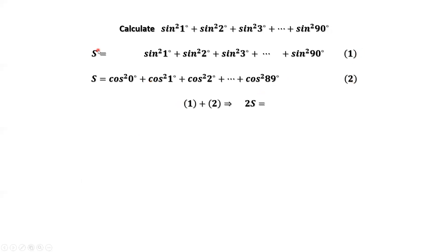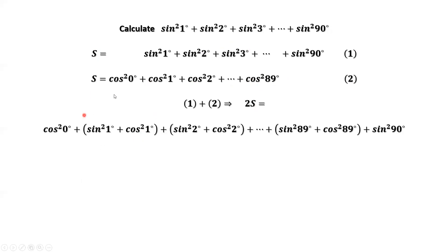Adding equation one plus equation two, the sum of the left-hand side is 2S. The sum of the right-hand side starts with cosine squared of zero as the first term and sine squared of 90 degrees as the last term. Then we pair the middle parts: sine squared of one degree plus cosine squared of one degree, sine squared of two degrees plus cosine squared of two degrees, until sine squared of 89 degrees plus cosine squared of 89 degrees.